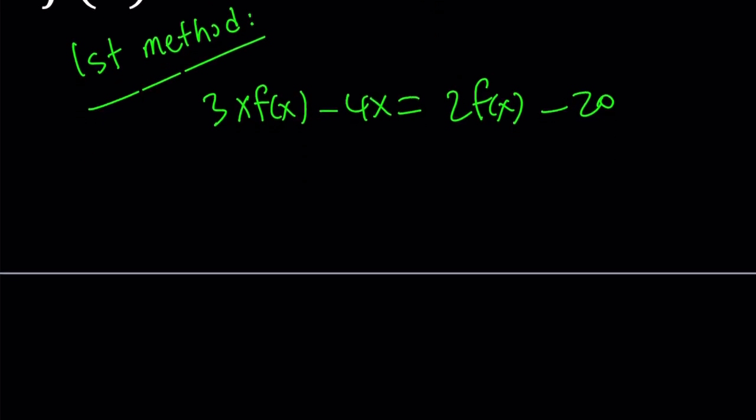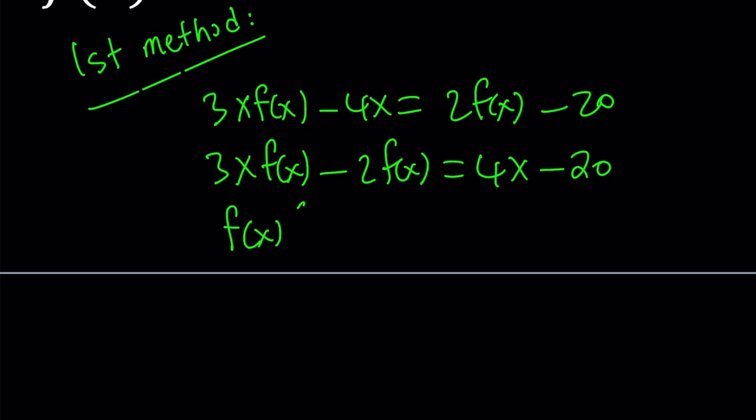Now let's put the terms that have f of x in them on the same side and everything else on the other side. So 3 times x times f of x minus 2f of x equals 4x minus 20. Let's factor out f of x. That gives us 3x minus 2 inside the parentheses and that equals 4x minus 20.